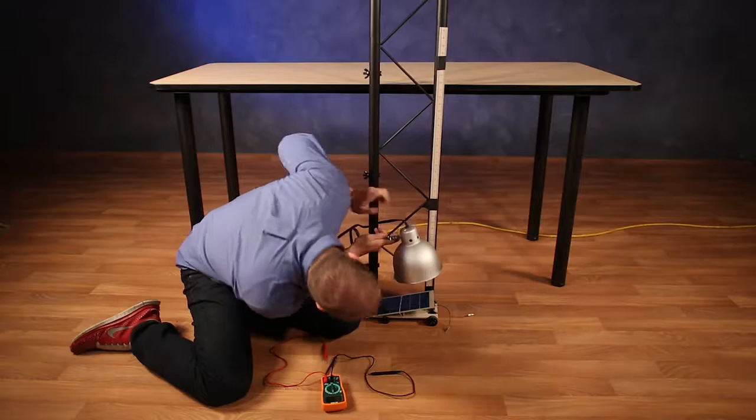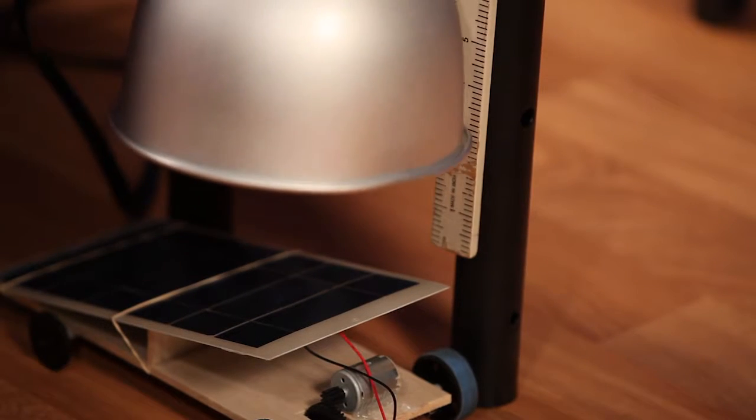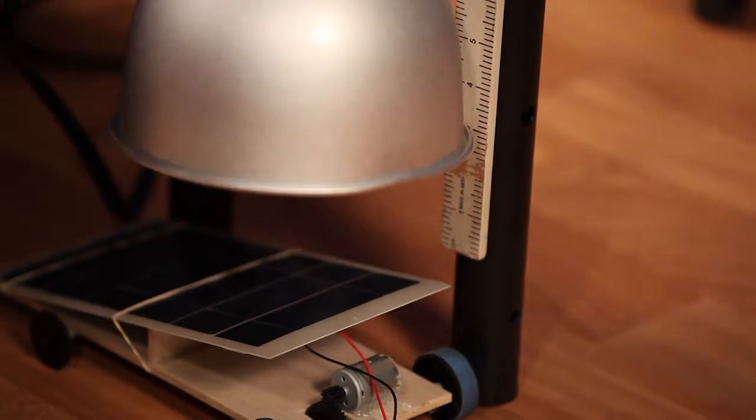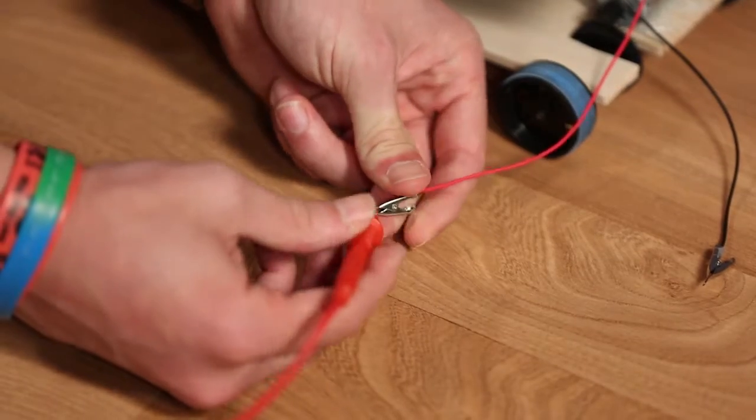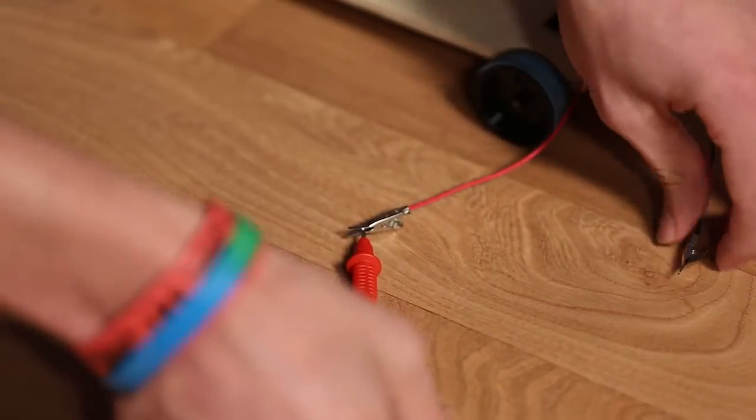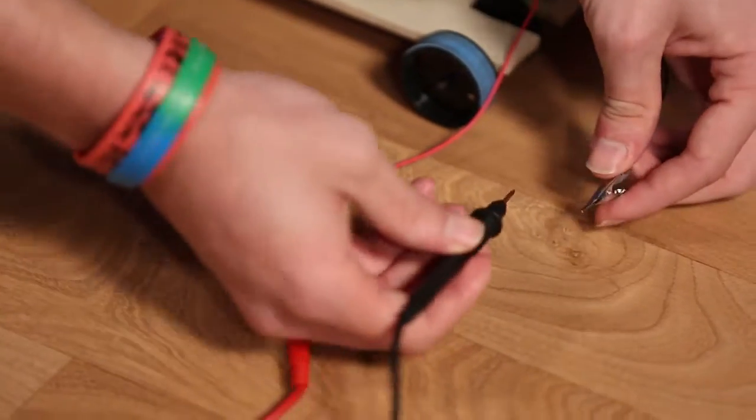Clamp the light three inches above the top of the ray catcher's solar panel. Be sure the light is off. Now attach the red multimeter lead to the red lead on the solar panel and do the same for the black leads.